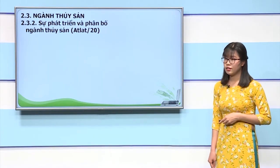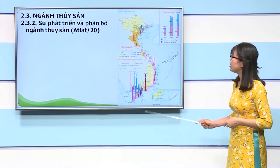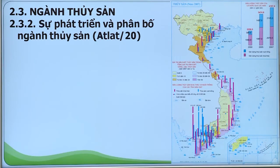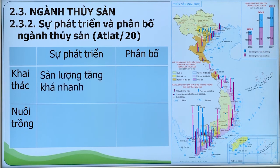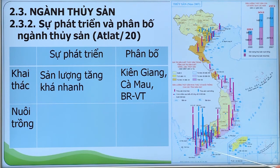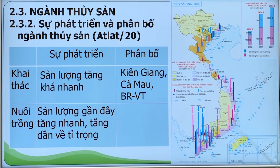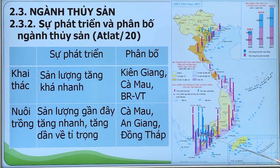Về sự phát triển và phân bố của ngành thủy sản, có thể khai thác trên Atlas trang 20. Ngành thủy sản được chia thành hai phân ngành: khai thác và nuôi trồng. Sản lượng thủy sản khai thác đang tăng nhanh và liên tục qua các năm, chủ yếu do tăng số lượng tàu và công suất tàu. Các tỉnh dẫn đầu về sản lượng thủy sản khai thác là Kiên Giang, Cà Mau và Bà Rịa Vũng Tàu. Sản lượng thủy sản nuôi trồng cũng tăng nhanh, đặc biệt trong thời gian gần đây, đang dần chiếm ưu thế hơn so với ngành khai thác. Các tỉnh dẫn đầu về sản lượng thủy sản nuôi trồng là Cà Mau, An Giang và Đồng Tháp.